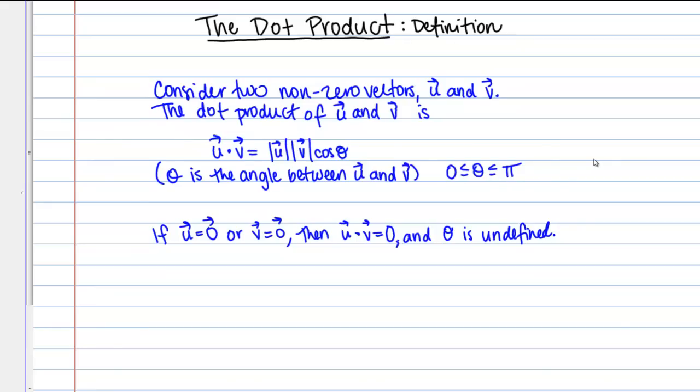One important thing to realize here is that the dot product is a scalar quantity. Look at this, u dot v. Once again, what it equals is the magnitude of u times the magnitude of v times cosine theta. All those elements are scalars. The magnitude of any vector is a scalar quantity. The cosine of theta is also just a scalar quantity. Keep in mind that the dot product is a scalar quantity.